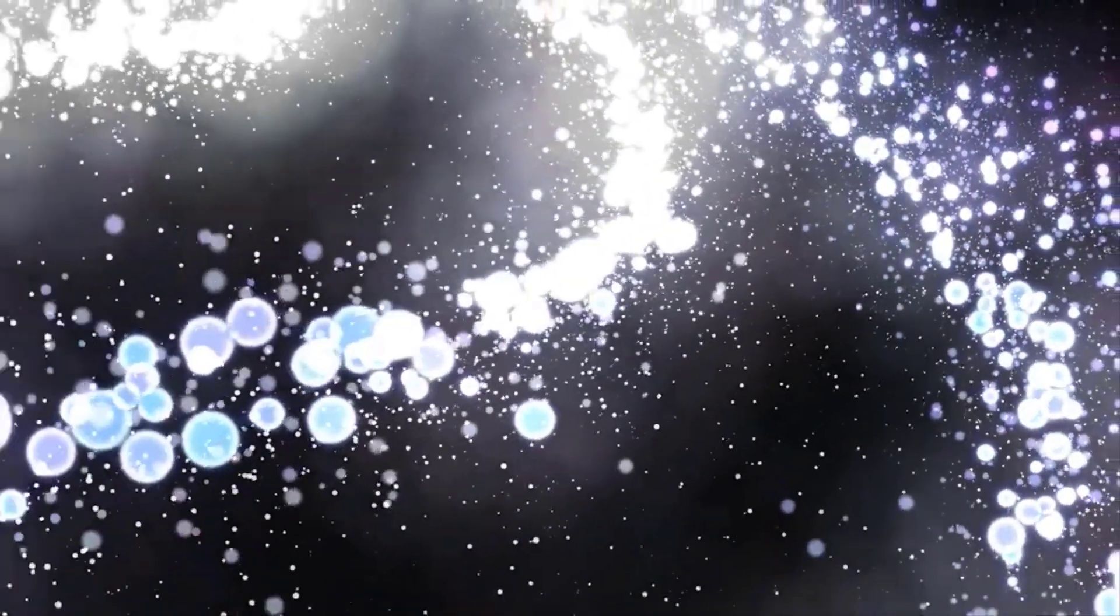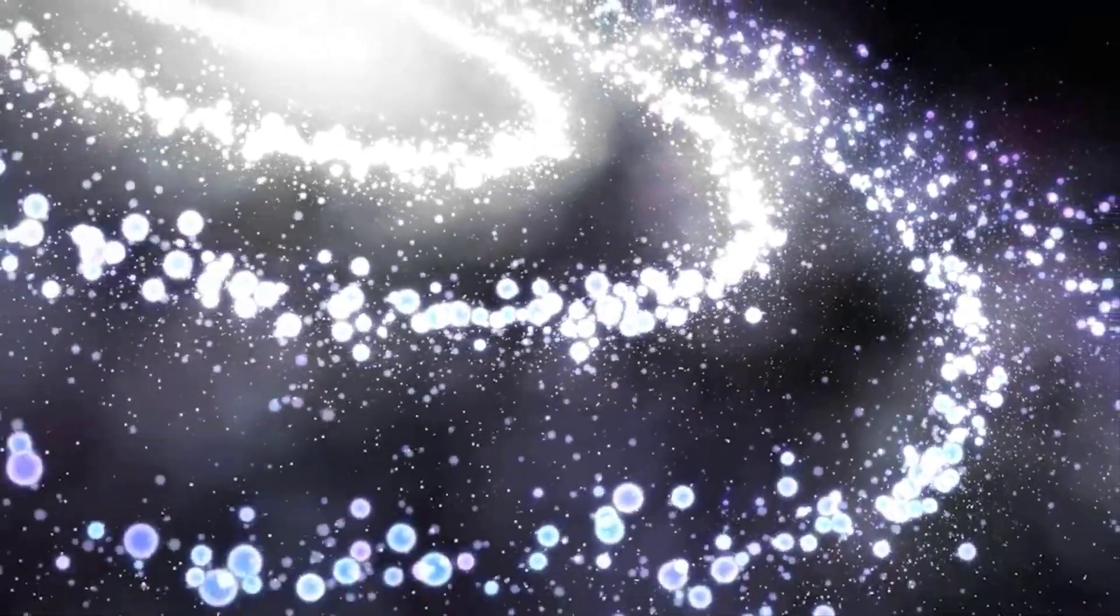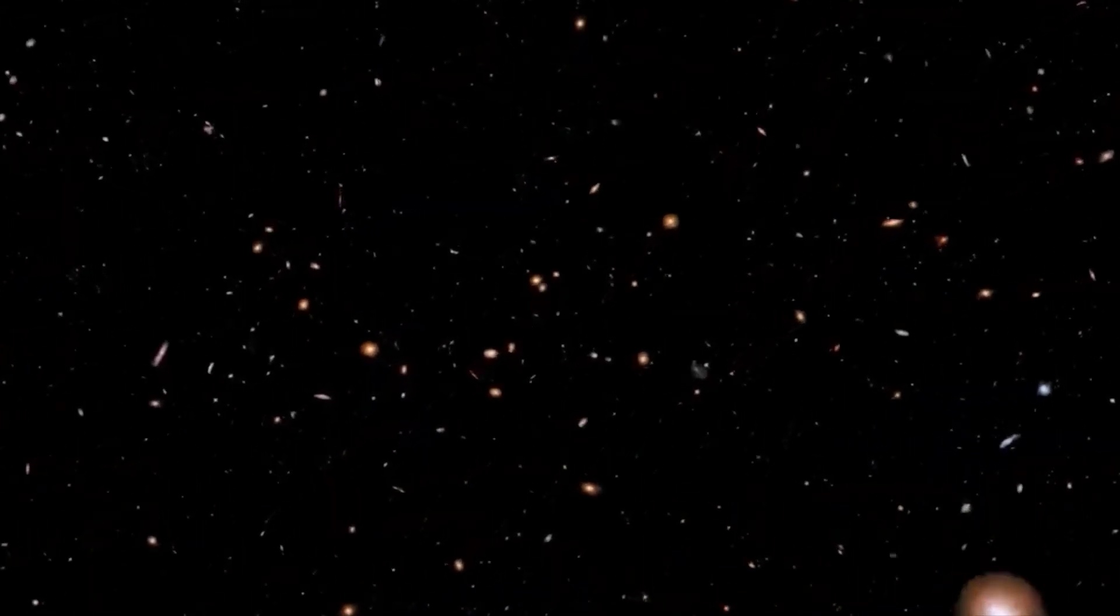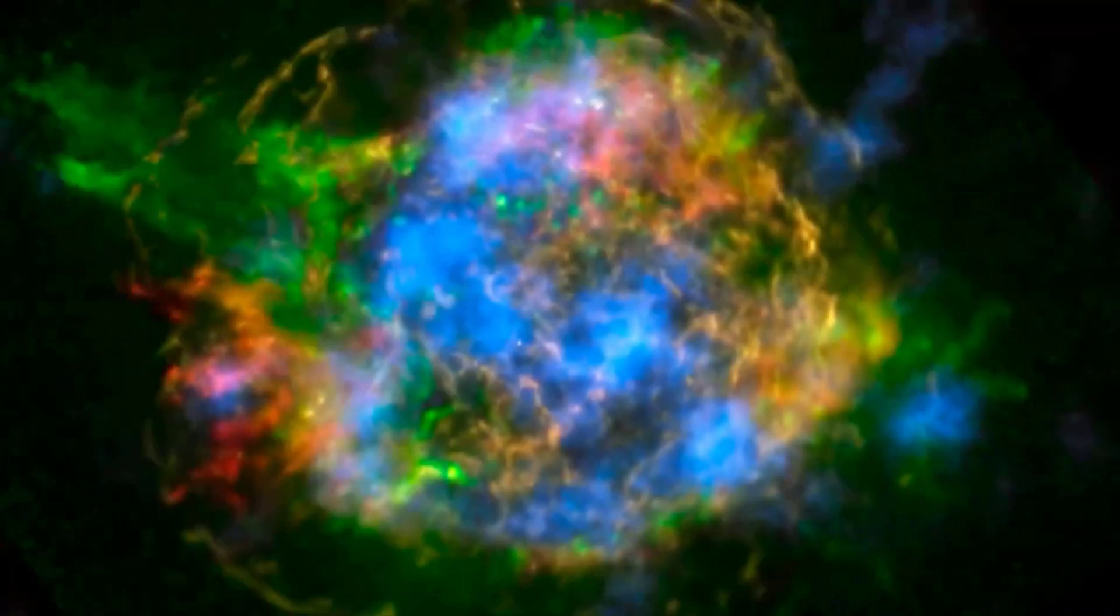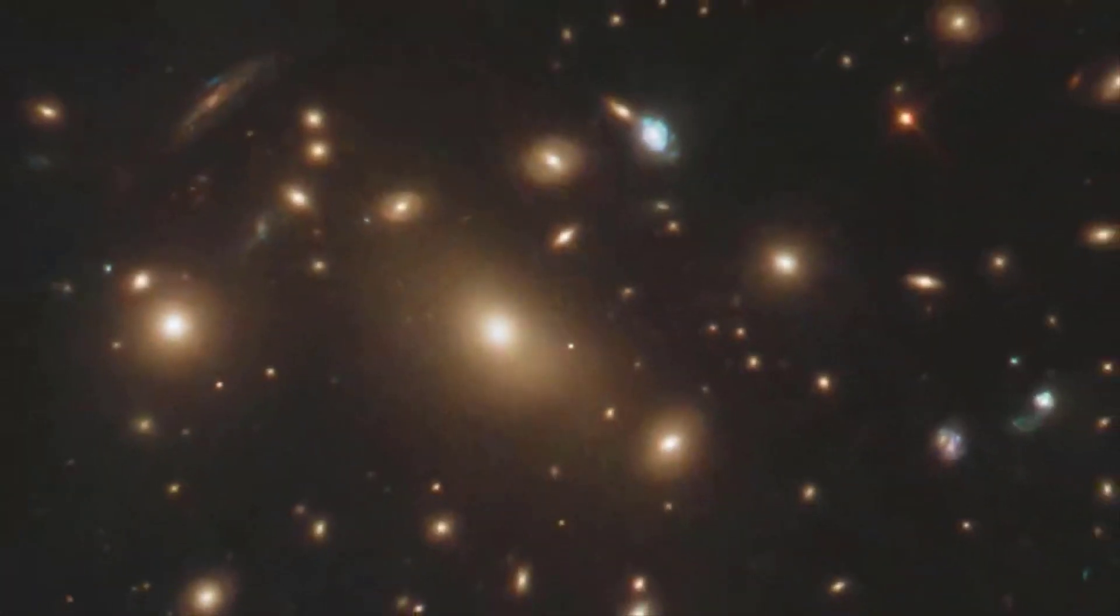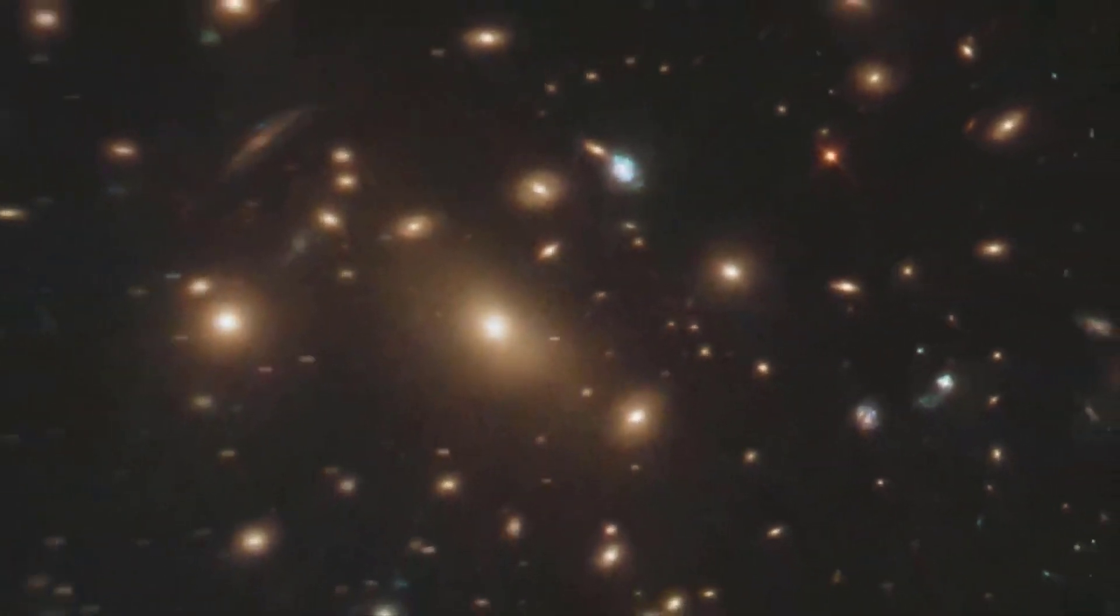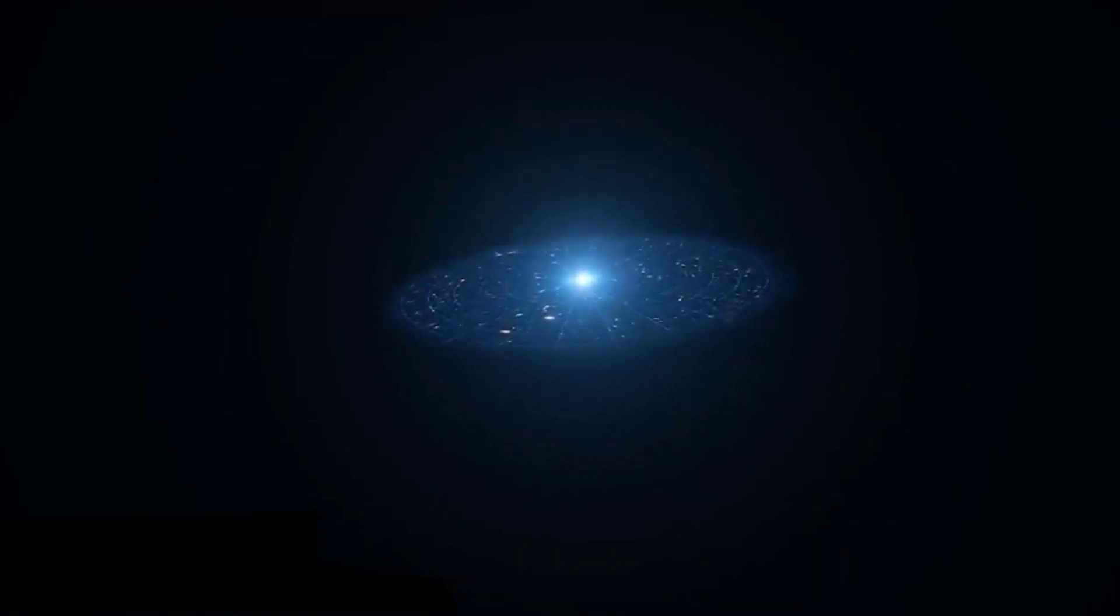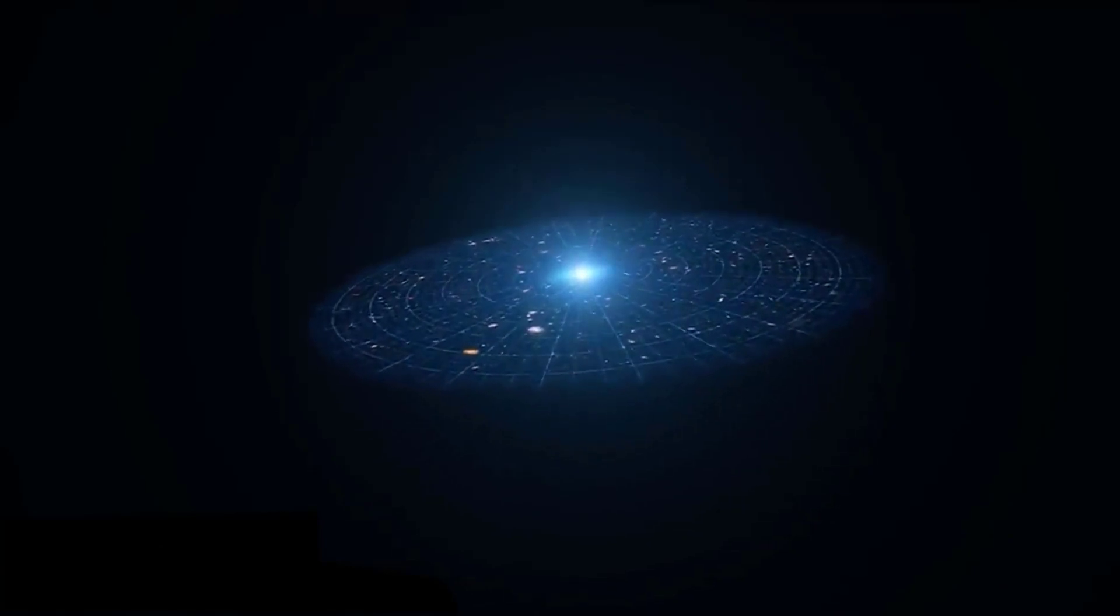Despite all the evidence pointing towards the existence of dark matter, there is also the possibility that no such thing exists after all, and that the laws of gravity describing the motion of objects within the solar system require revision. Dark matter appears to be spread across the cosmos in a net-like pattern, with galaxy clusters forming at the nodes where fibers intersect. By verifying that gravity acts the same both inside and outside our solar system, researchers provide additional evidence for the existence of dark matter.